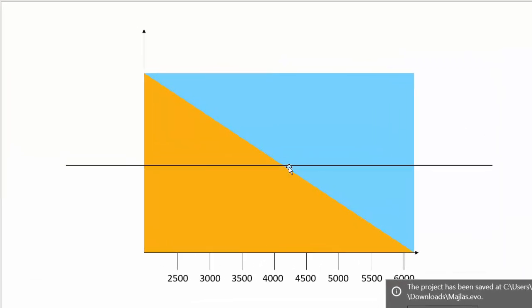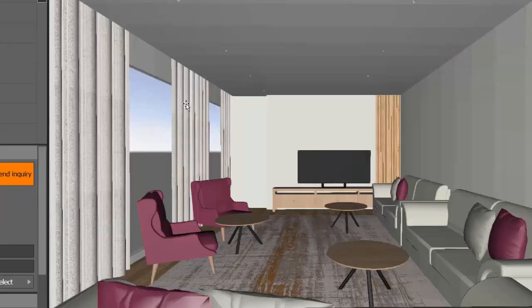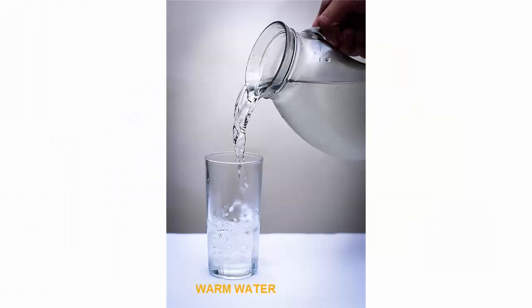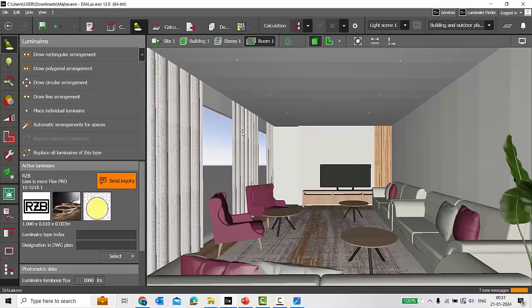If you still have confusion about balancing warm and cool, consider a simple example: if water is hot or very warm, to bring it to normal room temperature you mix in some cool water. Similarly, if you have cold water, you add some warm water to bring it to normal room temperature. Remember this example — it will help you easily understand and adjust the white balance scale in Dialogs EVO.